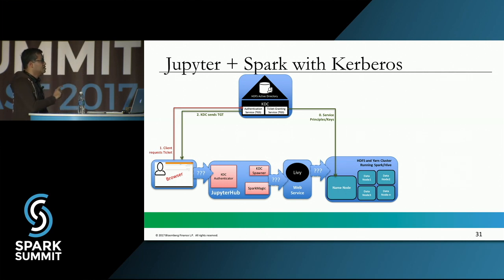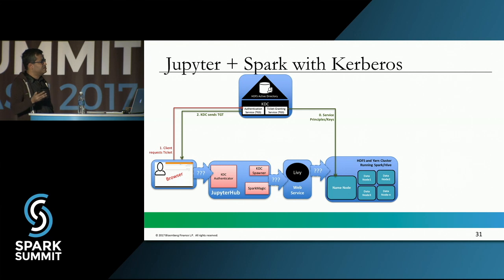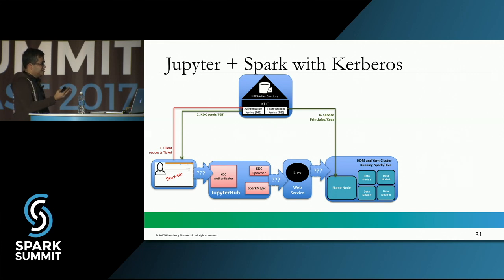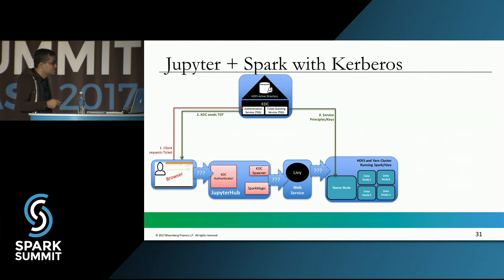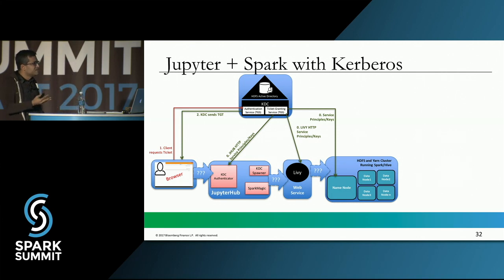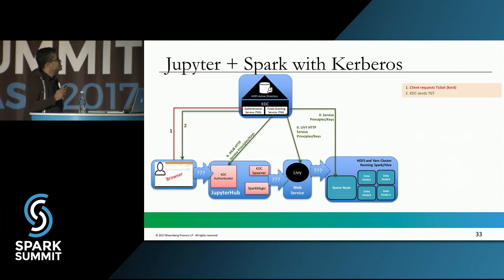Just as HDFS gets service principals and keys when it starts up, JupyterHub and Livy also get their own service principal and keys — in this case, HTTP-type service principals since they run HTTP services. Now let's walk through the communication. The client sends a request to the KDC and gets a ticket. The client sends an HTTP request to the KDC Authenticator. The KDC Authenticator, upon seeing the request, sends back a 401 Authenticate Negotiate response — also known as SPNEGO — which is common for web authentication scenarios and is handled by most modern browsers.